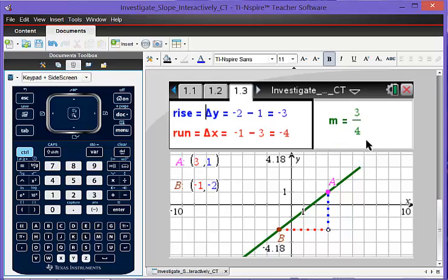Slope is a fraction in simplest form, in green and the line is green. And this shows me that negative 3 divided by negative 4 is a positive 3 fourths. The line is slanting uphill.